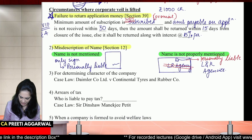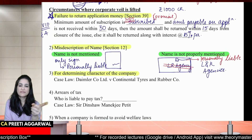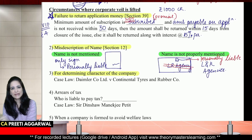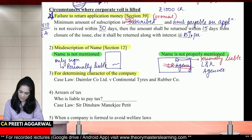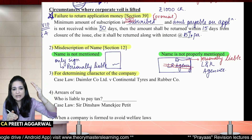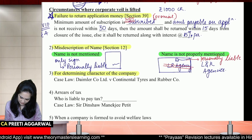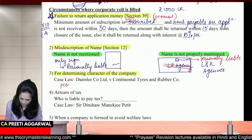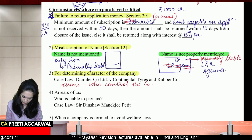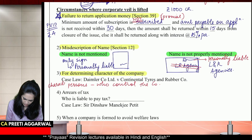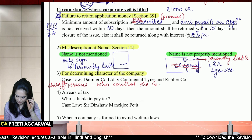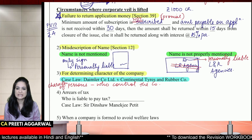For determining the character of the company — can I say this company is my friend or that company is my enemy? It's an artificial person. The persons who manage the company — they can be your friend or enemy. So instead of looking at the character of the company, we lift the veil and see who is controlling the company. By lifting, you will determine the character of the persons who actually control the company. There is a case law — Daimler Company Limited versus Continental Tires and Rubber Company.